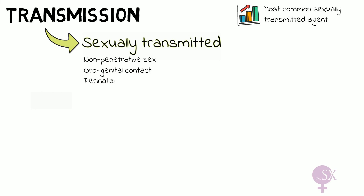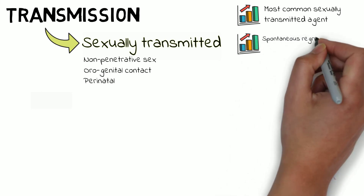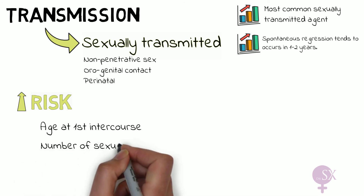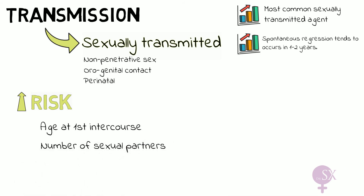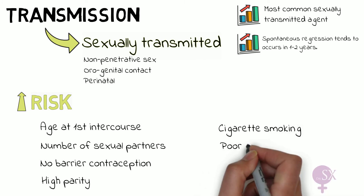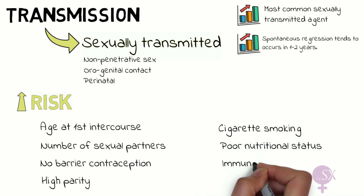Most HPV infections are subclinical and spontaneous regression tends to occur in one to two years, especially in adolescence. However, there are risk factors which increase one's risk for obtaining HPV and its persistence. These include the age at first intercourse, the number of sexual partners, sexual activity with no barrier contraception, high parity, cigarette smoking, poor nutritional status, and immunodeficiency.